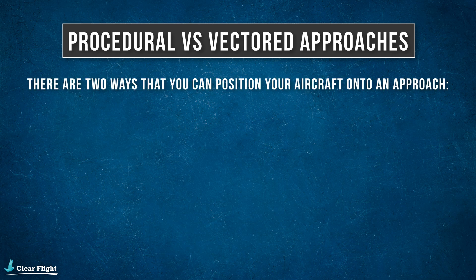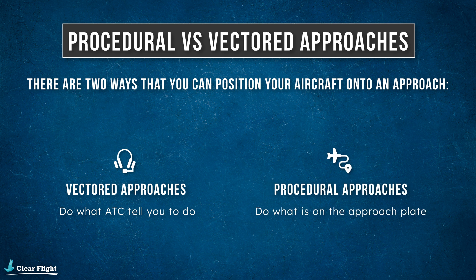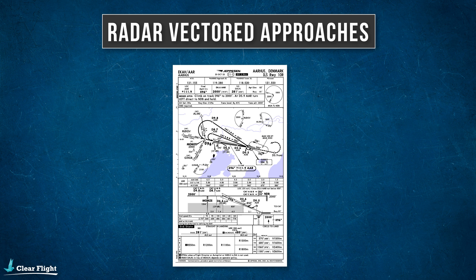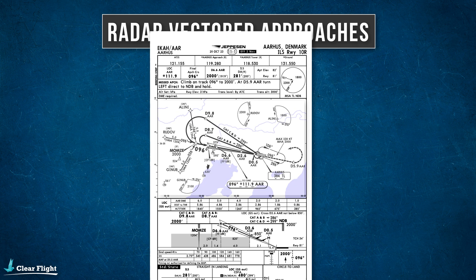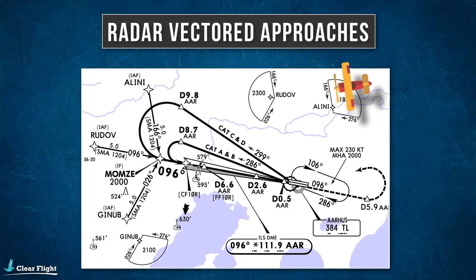There are two ways that your aircraft can be positioned onto an instrument approach. You can either be radar vectored by air traffic control, or you can fly the procedural approach. Radar vectored approaches are more common than procedural approaches because they're usually easier for the pilot and more efficient for air traffic control.